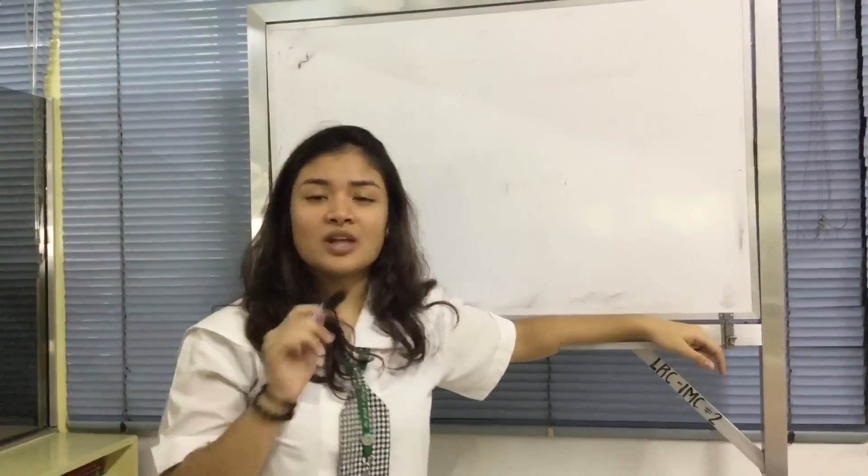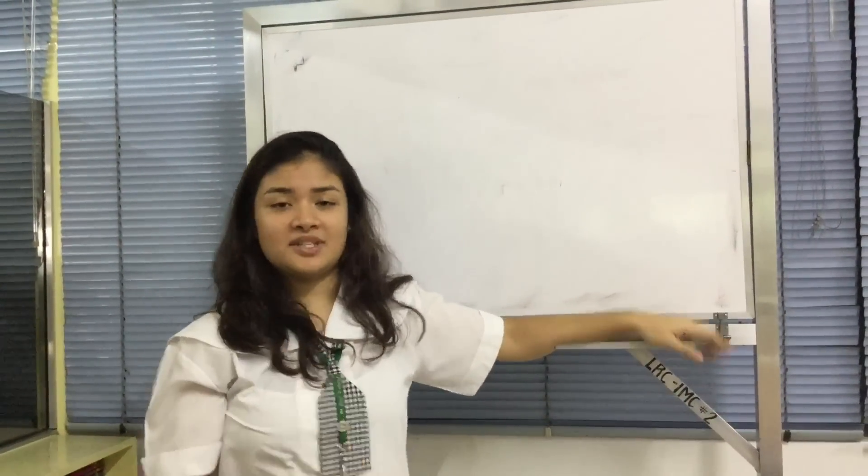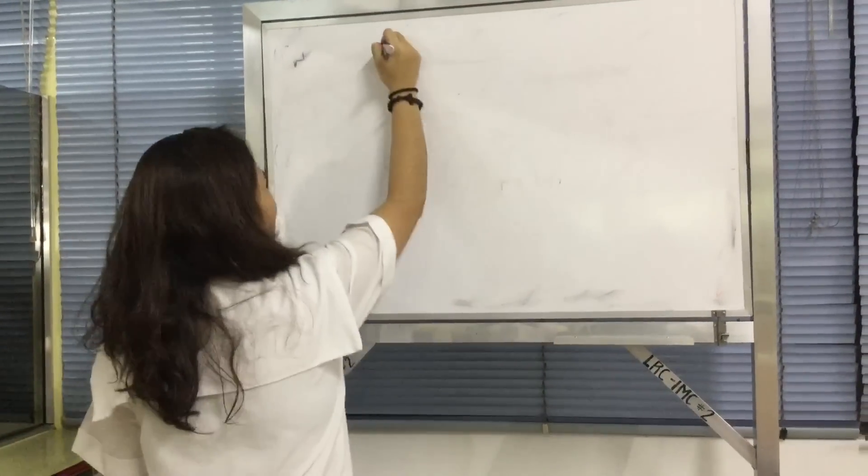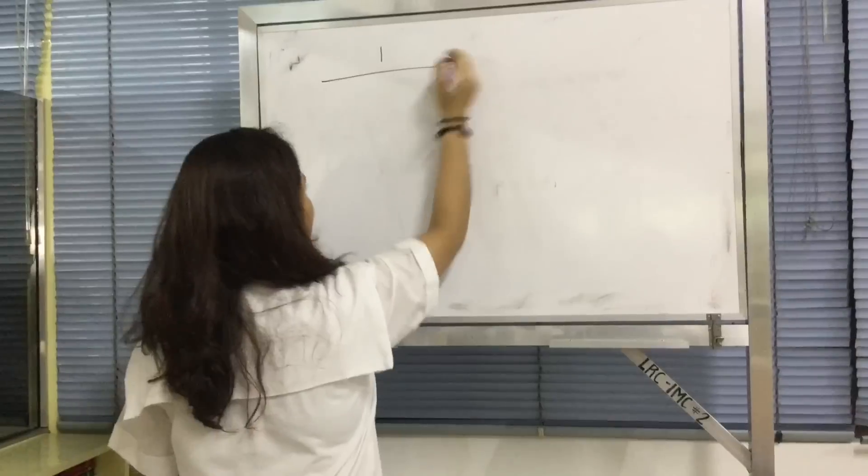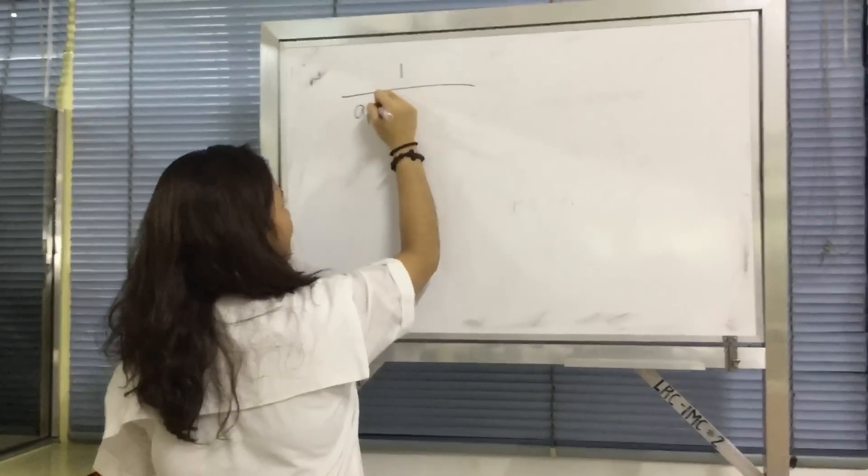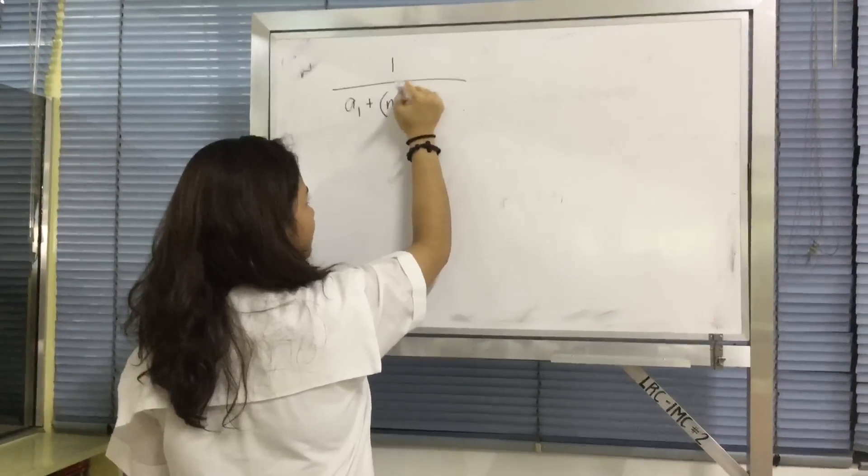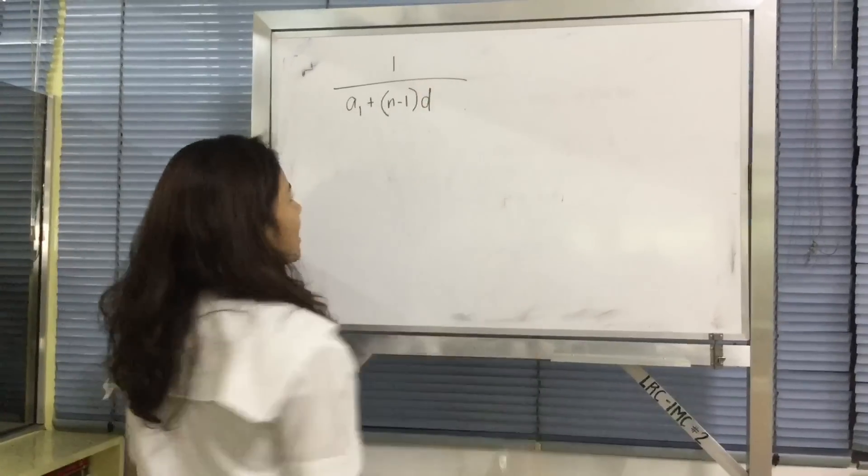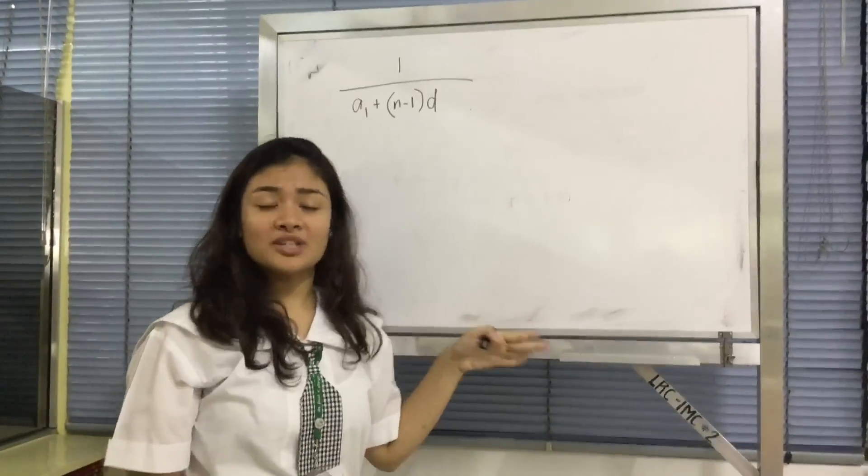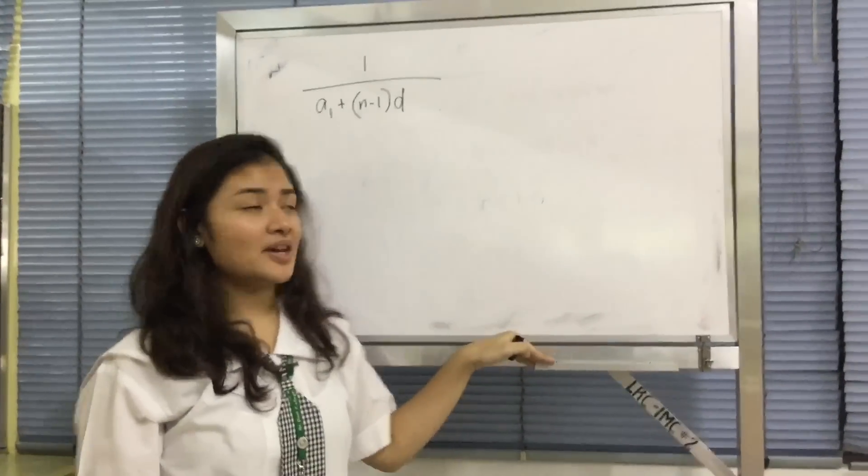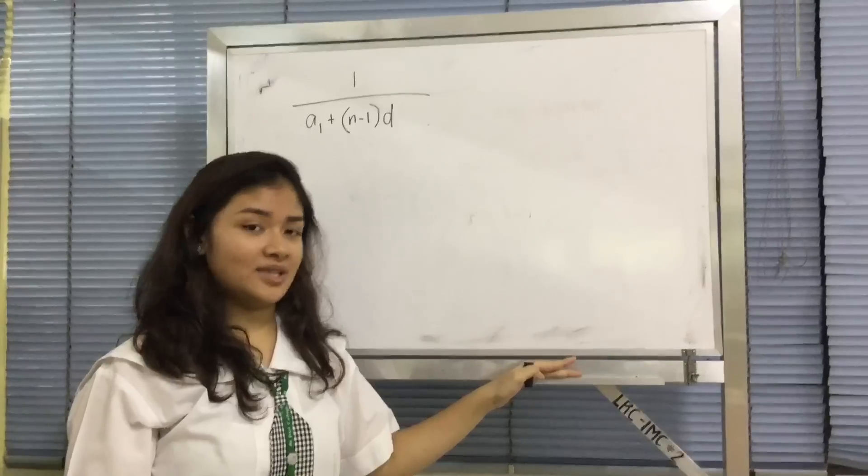What is the formula for harmonic sequences? 1 over a1 plus n minus 1 times d. As you can see, the formula for harmonic sequences is also the same as the formula in arithmetic sequences.